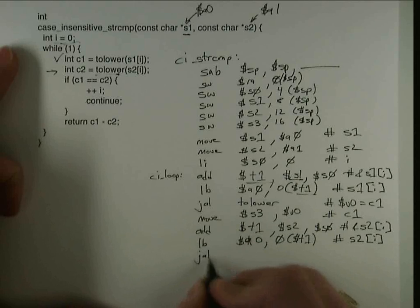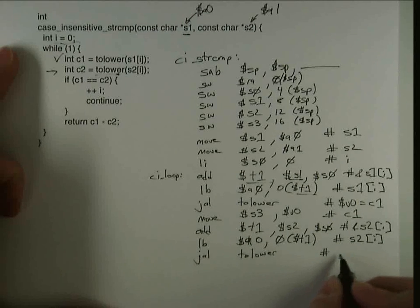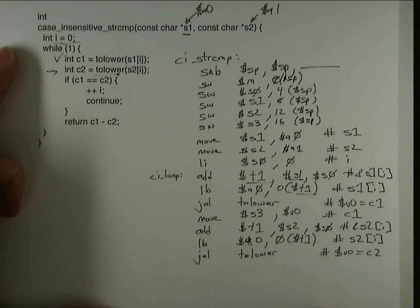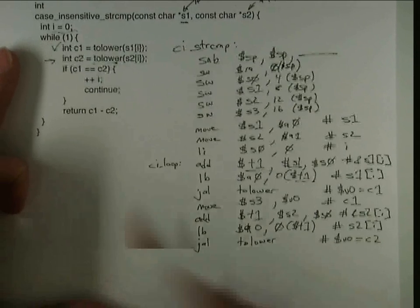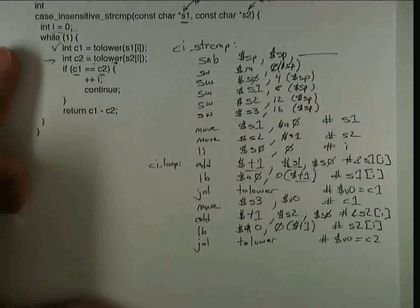And again, I'm ready to do the jump and link to tolower, because I have no caller saved registers that need to be alive past this function. So after this function, v0 is going to hold c2, and I can immediately do this comparison of c1 and c2, because those are both in registers. c1 is in s3, and c2 is in v0.